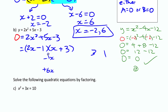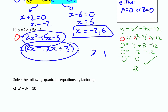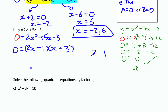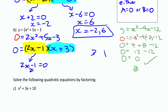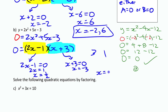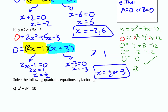Flipping to 1 and 3 gives minus 1x plus 6x, which gives the correct middle term of plus 5x. So those two binomials are correct. Setting each factor to zero: if 2x minus 1 equals zero, then 2x equals 1 and x equals one half. If x plus 3 equals zero, then x equals negative 3. The two solutions are x equals one half or negative 3.